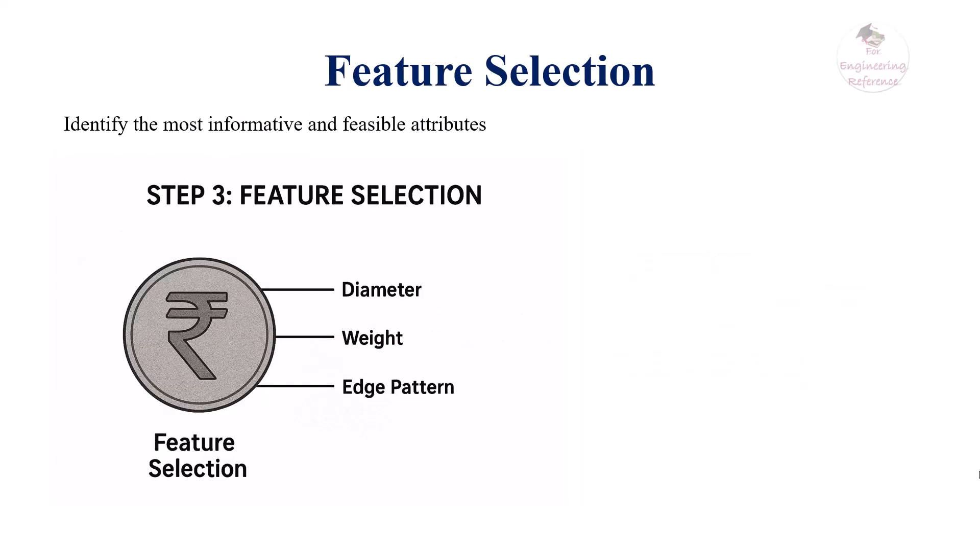Then comes feature selection. We choose the most informative features or attributes that contribute to solving the problem. In the case of coin recognition, useful features might include diameter,